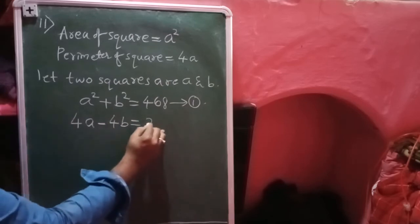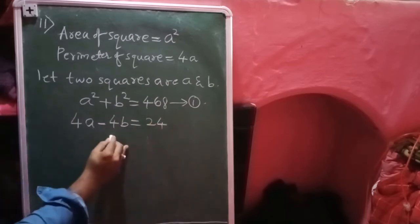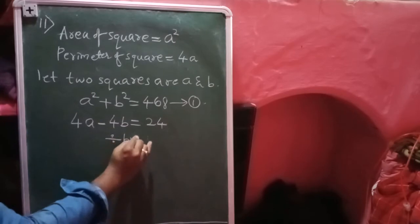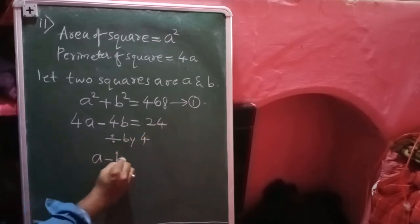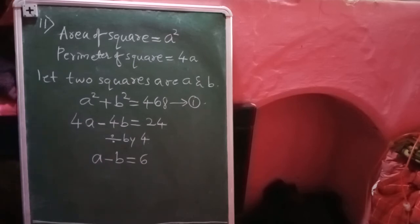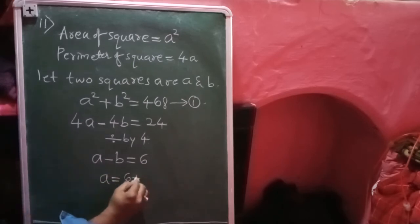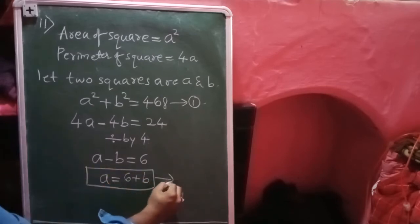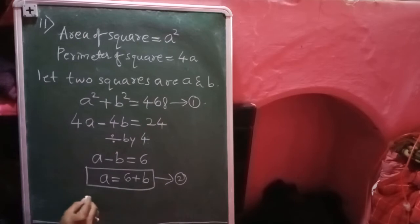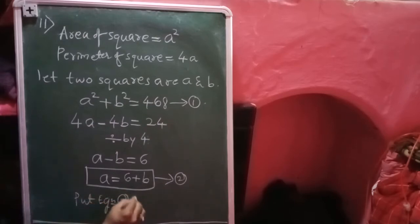So 4a - 4b = 24. We can solve this further by dividing each term by 4, so it becomes a - b = 6. If you want the value of a, you can write a = 6 + b. This will be equation number two, and I'm going to substitute this value into equation one.